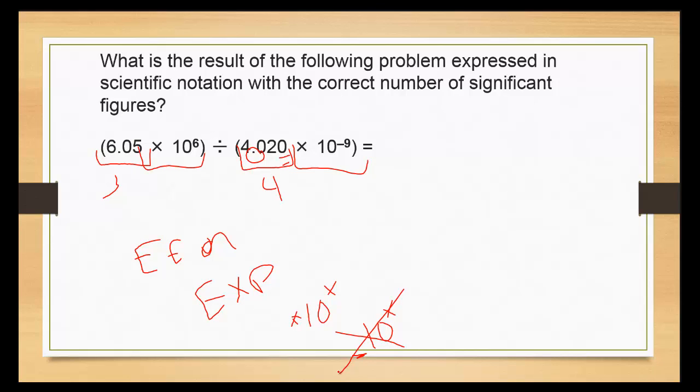Just to talk you through how my calculator works, I would put 6.05 second function EE 6. EE or EXP means times ten. That replaces that. It's not 6.05 times EE. Don't put the times sign in there anywhere.